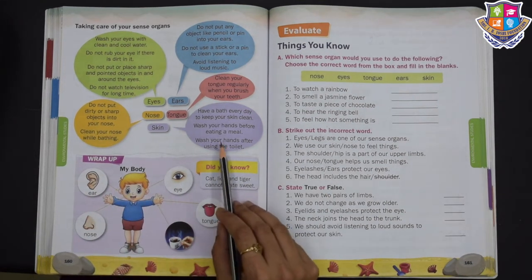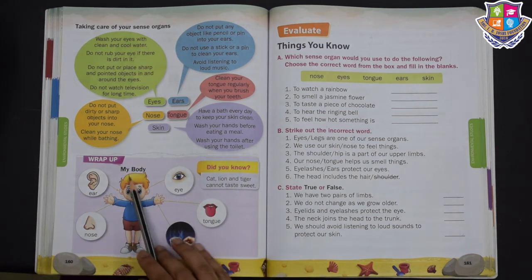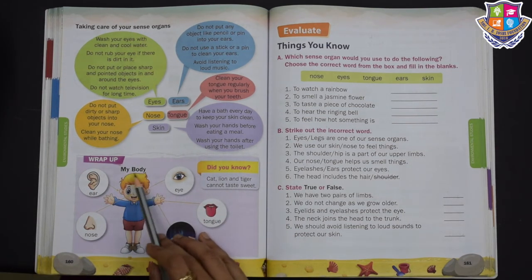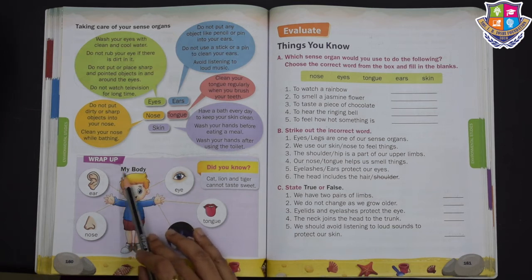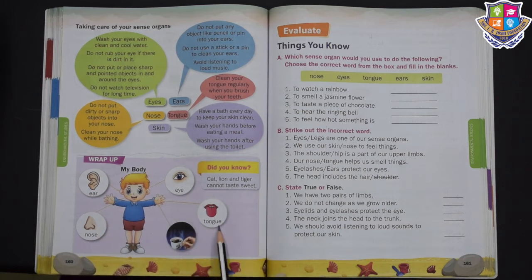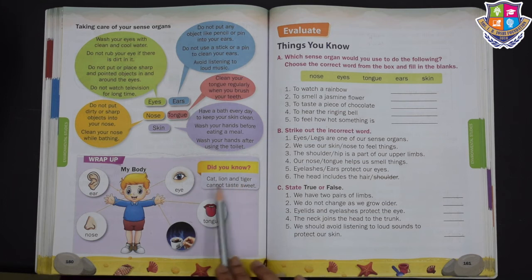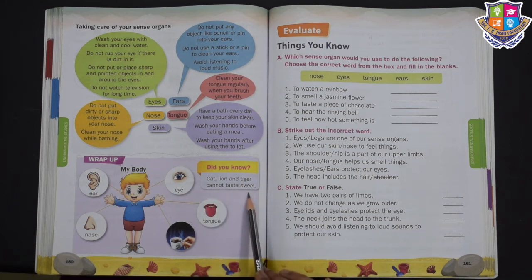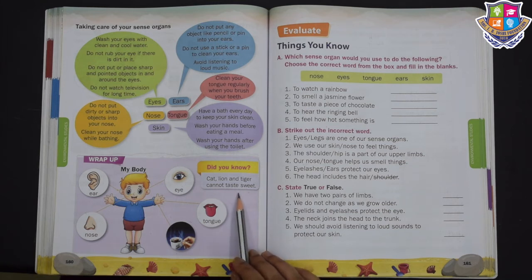I hope students you all have understood. In this lesson we have seen about my body and sense organs: ears, nose, eyes, tongue, and skin. Did you know cats, lions, and tigers cannot taste sweet things? They don't know what the taste of sweet things is.